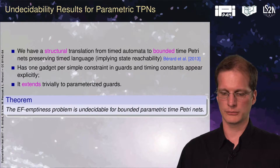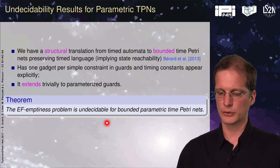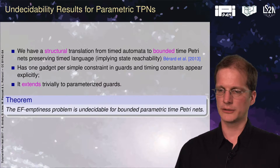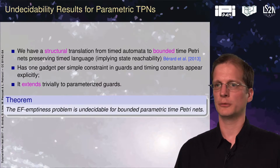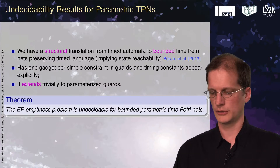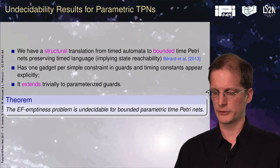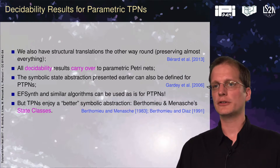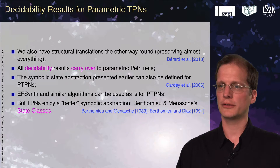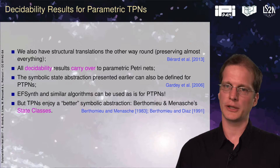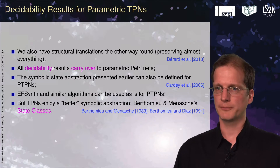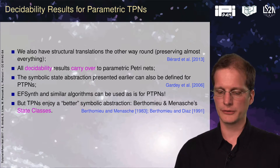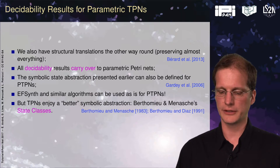So if in this construction we change the constants by parameters, nothing changes really. Using this construction, we can get all the undecidability results from timed automata into bounded parametric time Petri nets. In the other direction, we also have structural translations from timed Petri nets to timed automata, and we can use them to get decidability results.